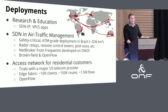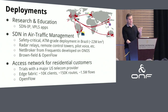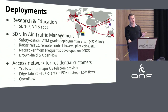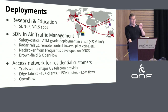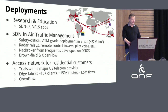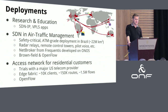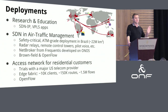A quick overview of current ONOS deployments: in the past most deployments were research networks and science and education networks, where most deployments were using SDN-IP and VPLS applications. We also learned earlier this year, completely unbeknownst to us, that in air traffic management networks — not ATM networking, but actual air traffic management — there is a large safety-critical deployment in Brazil responsible for safe travel in that area.